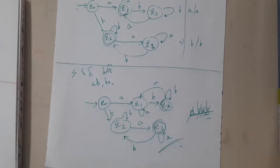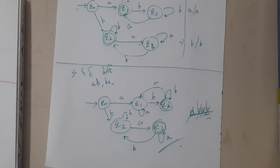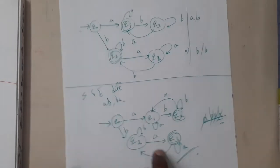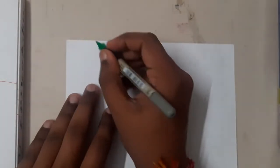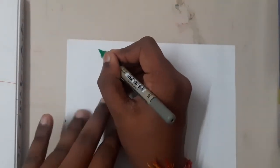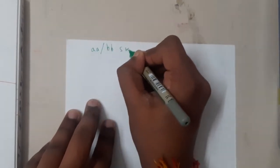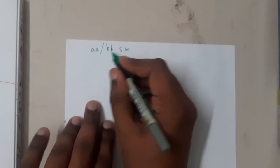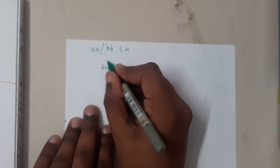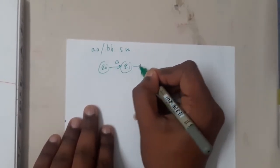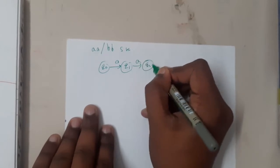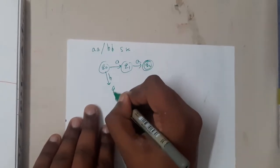I think everyone is now clear with starting and ending with symbols. In my book there are a few more things — like starting with double 'aa' or starting with double 'bb'. I will take one or two examples; after that everyone can try the rest. If I teach everything, most students will just watch like a movie. So: 'aa' and 'bb' starting with — these are two different paths. From q0, if 'a' comes I go to the upper path to q2 (final state); if 'b' comes I go to the lower path.